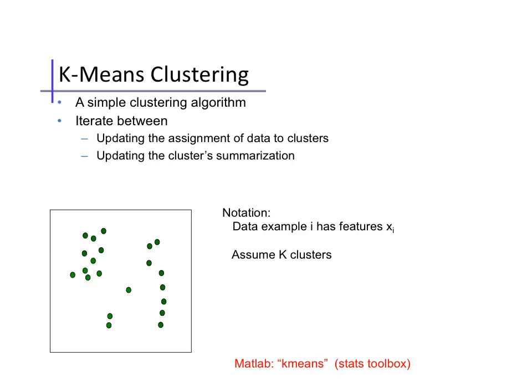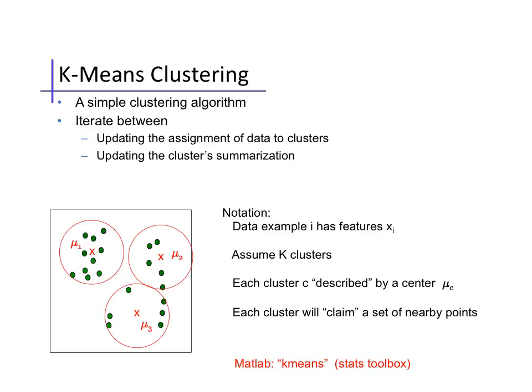For our notation, we'll denote data example i as x_i. Notice I use a subscript here instead of our usual superscript. We'll assume there are exactly K clusters. Each cluster is described by a single center point μ_c. So here we have three clusters, μ_1, μ_2, and μ_3. Each cluster claims a set of nearby points, so the cluster is effectively defined by closeness to the cluster center.